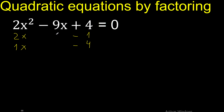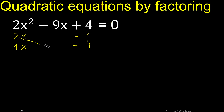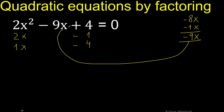Let's analyze if it is correct like this: 2 multiplied by minus 4 is minus 8, x; 1 multiplied by minus 1 is minus 1, x. Minus 8 minus 1 is minus 9. Equal — therefore it is correct.